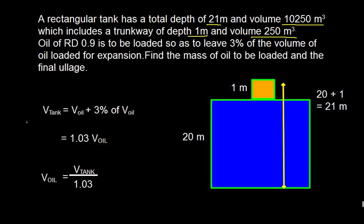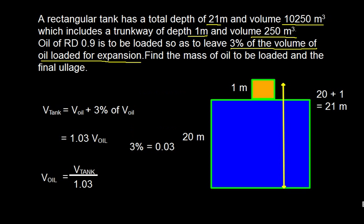The volume of the tank equals the volume of oil plus three percent of the volume of oil for expansion. Three percent in decimal is 0.03, so we can write: volume of tank = 1.03 × volume of oil.